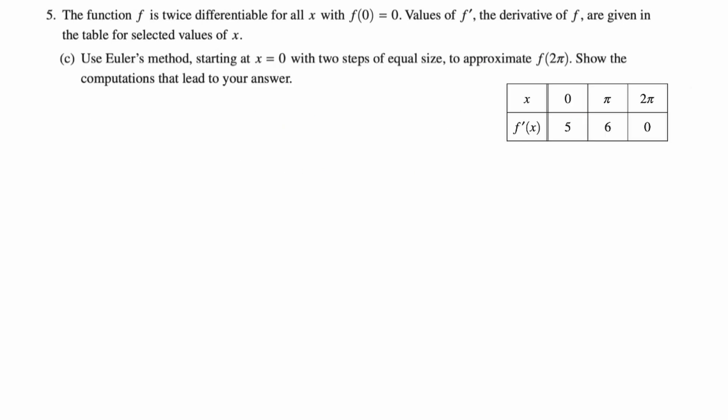We want to use Euler's method starting at x equals 0 with two steps of equal size to approximate f(2π). Show the computations that lead to your work. I always do Euler's with a table, and my table always has columns x, y, and then dy, and dy is f prime evaluated at whatever times delta x. Do not forget the delta x. You forget the delta x and you're done for on this.